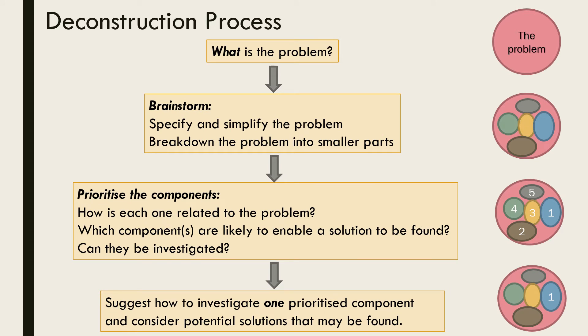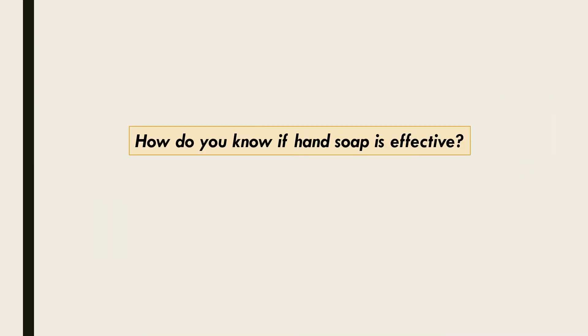Let's deconstruct a simple problem as an example. How do you know if hand soap is effective? First of all, let's brainstorm some of the factors that may influence the effectiveness of hand soap that are able to be controlled. The type and brand of soap would be an important factor to control, as different soaps will vary in their composition.